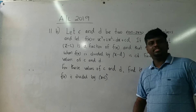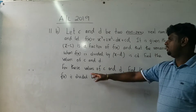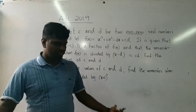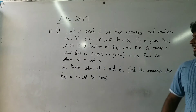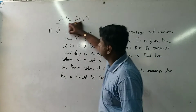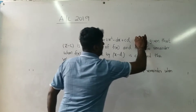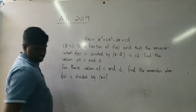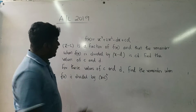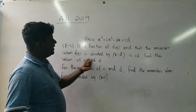Find the values of c and d. It's a straightforward question. Then, for these values, we have to find the remainder when f(x) is divided by x plus 2. So f(x) is given. If x minus c is a factor of f(x), and if f(x) is divided by x minus d the remainder is c.